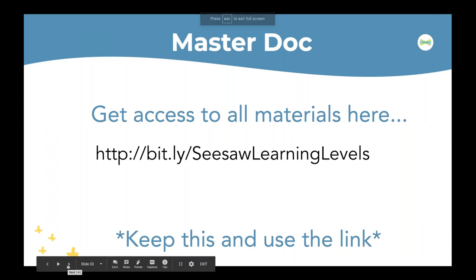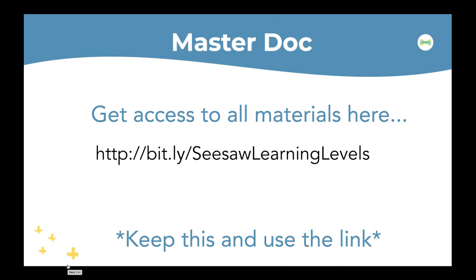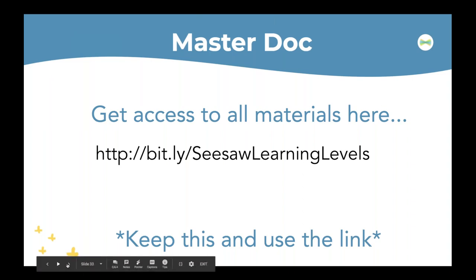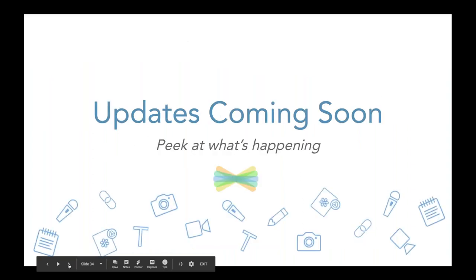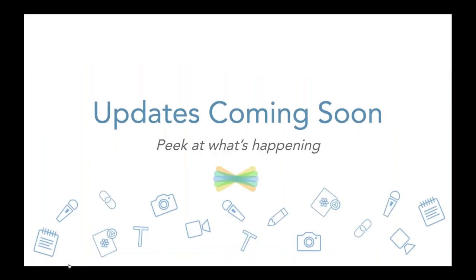I'm going to pause and give you the second set of three digits to combine to create this code. The next three digits you'll need for your certificate are 4, 9, 2. When you put those two sets of three together, you'll have your code to get your certificate if you're watching via recording. Those of you live will get it sent automatically.